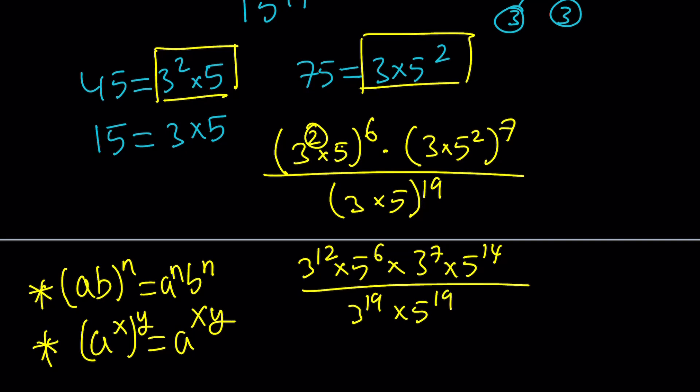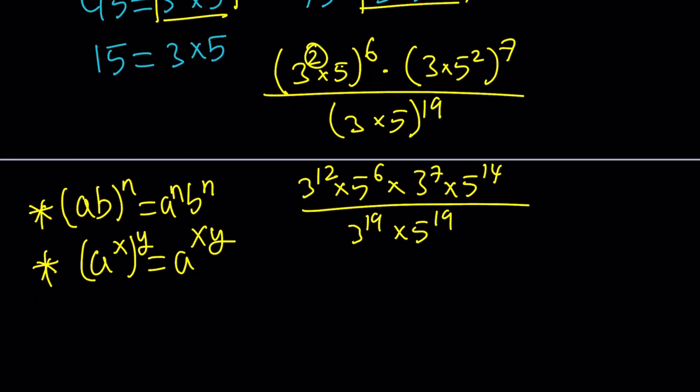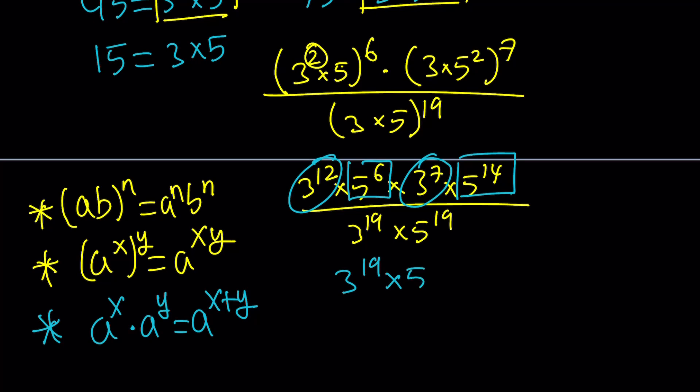Great. The next step would be to put together these powers. Here's the powers with the same base. For example, 3 to the 12th power and 3 to the seventh power. When combined you're supposed to add the exponents. So this just gives us another property of exponents, which is adding the powers or exponents when they're multiplied. So that gives us 3 to the power of 19. But 5 to the 6 and 5 to the 14 by addition gives us 5 to the power of 20, and that's divided by 3 to the 19 times 5 to the power of 19.